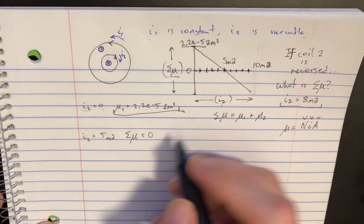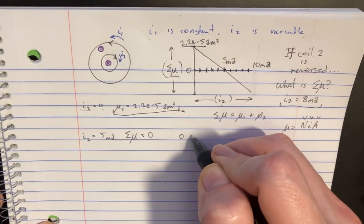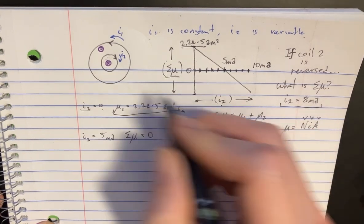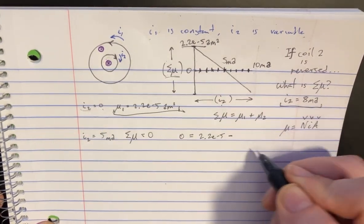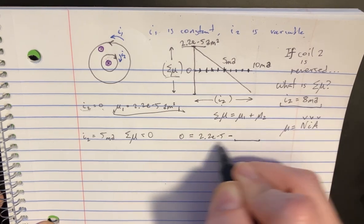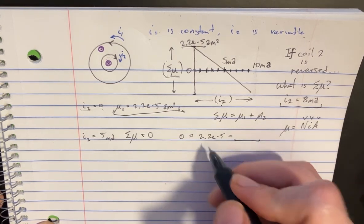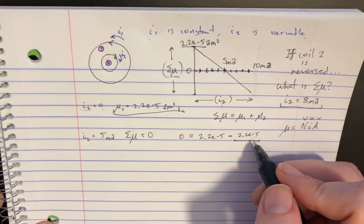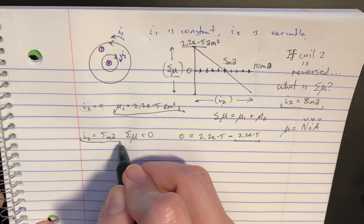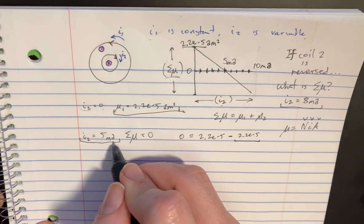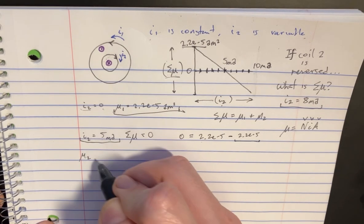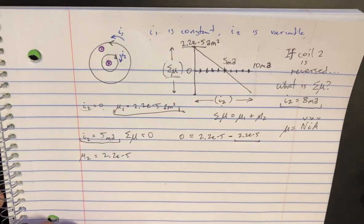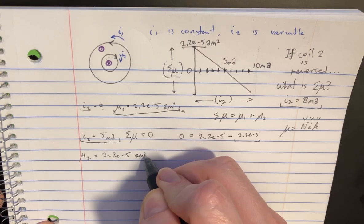When the net M is equal to zero, that's going to give us this equation: zero equals 2.2 e to negative five. And then because they're in opposite directions, we're going to be subtracting something. It's obvious it's going to be 2.2 e to negative five. Otherwise, we can't equal zero there. So when the current of I2 is at five milliamps, that also means that M2 is equal to 2.2 e to negative five amps meter squared.